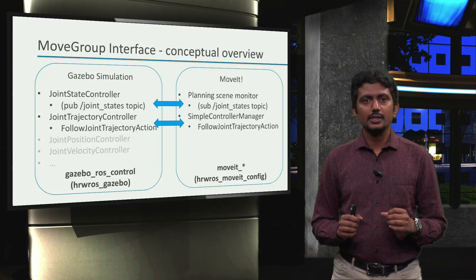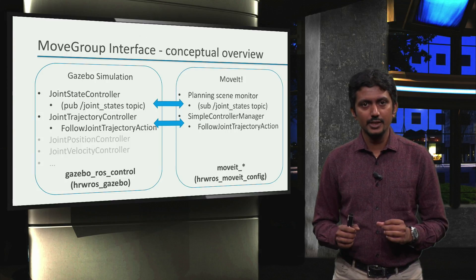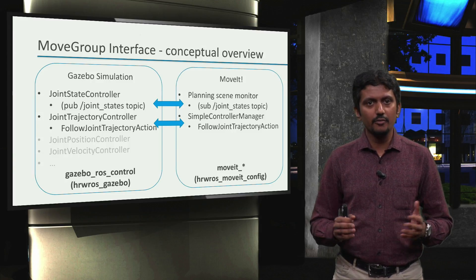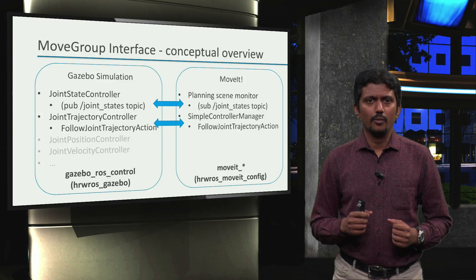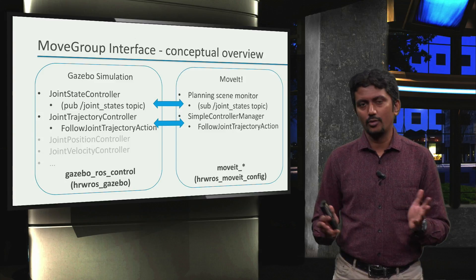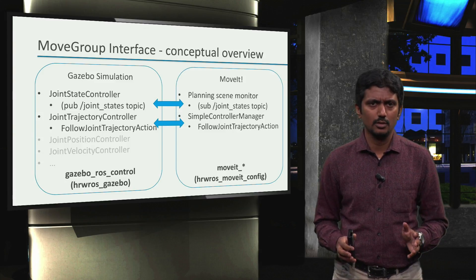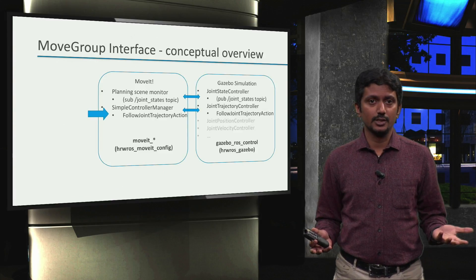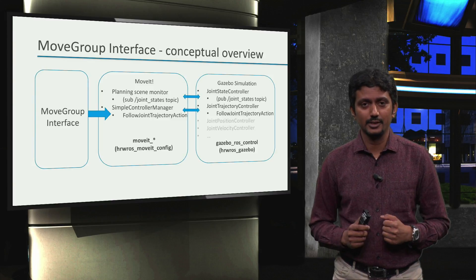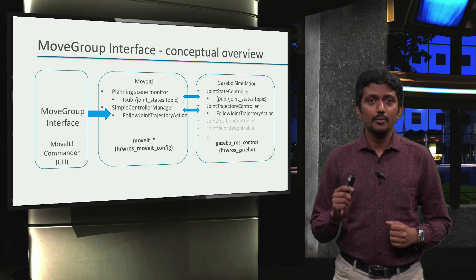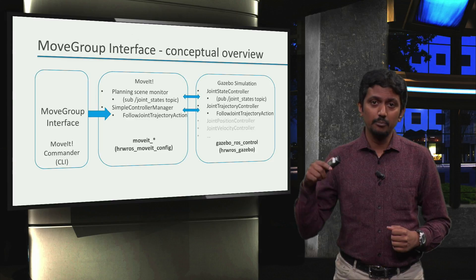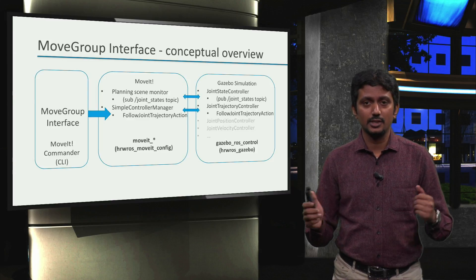Let's first get a conceptual overview of the movegroup interface, for which we will go back to the block diagram we had seen when we configured controllers for moveit. Moveit will take care of trajectory execution for us by coordinating with Gazebo or real hardware. We send these trajectories to moveit using the movegroup interface. In fact, the moveit commander command line interface from the previous video also implicitly used the movegroup interface to send trajectories to moveit.